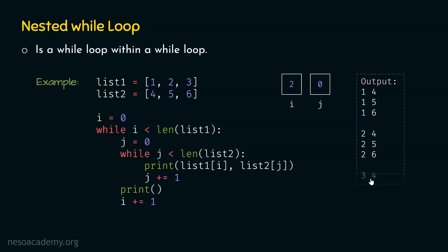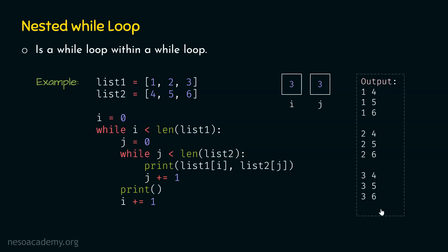Then a new line is printed, and i is incremented to two. Since two is still less than three, the condition is satisfied, we go inside, j is reset to zero, and three four, three five, and three six are printed on the screen. Then a new line is printed and i is incremented to three. At this point, three is not less than three, so the outer while loop terminates.